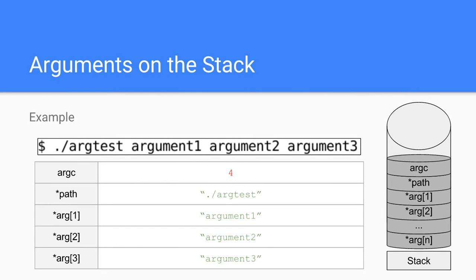So as you can see, in this command line we typed dot slash argtest, argument one, argument two, argument three. In this case argc would be four. The path would be a pointer to the string dot slash argtest — these are zero-terminated strings. Then arg1 would be a pointer to the string argument one, then a pointer to the string argument two, then a pointer to the string argument three.